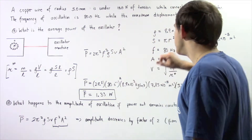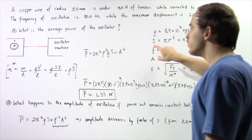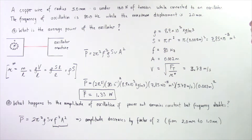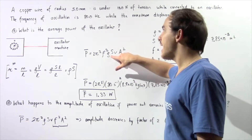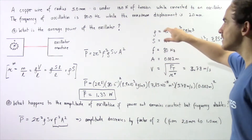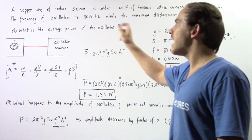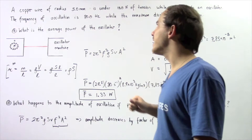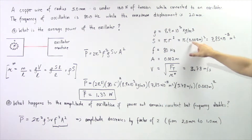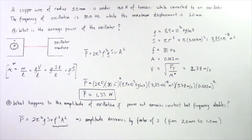The frequency is given as 80 hertz. The density of copper, which we can find in a textbook or online, is 8.9 × 10³ kilograms per meter cubed. The cross-sectional area is π times radius squared, where the radius is 0.005 meters (converting 5 millimeters to meters). This gives approximately 7.85 × 10⁻⁵ meters squared.